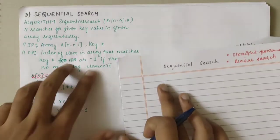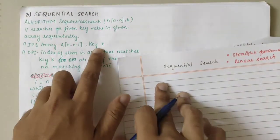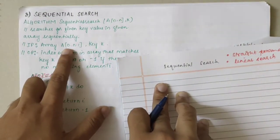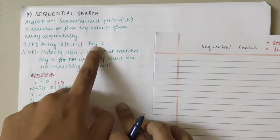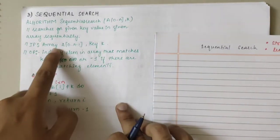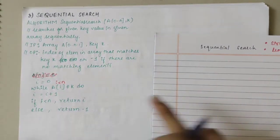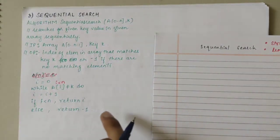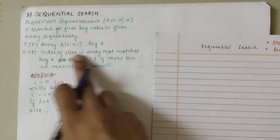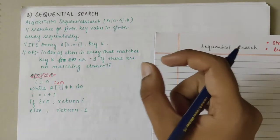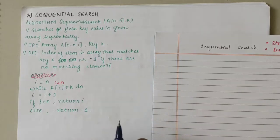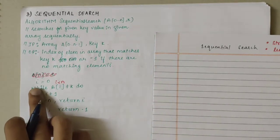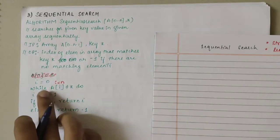In this algorithm, we have a key value and an array. Our main aim is to check if this key value is present in the array or not. If the key value is present in the array, we get that particular index position as the output. If not, we get minus 1 as the output. Here we have the algorithm.